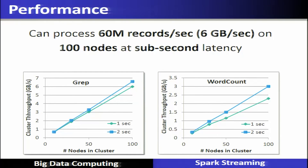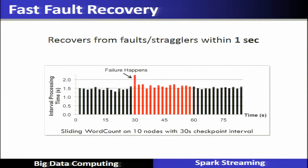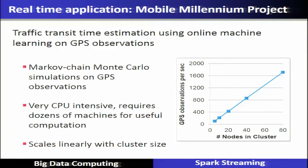For performance, even grep and word count achieve sub-second latency — around 1 to 2 seconds — showing very good performance. Compared to other systems, Spark streaming shows better performance. Storm achieves higher throughput at low latency whereas Spark achieves better overall throughput. The fault tolerance recovery system recovers from faults or stragglers within one second.